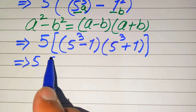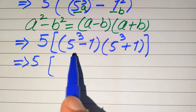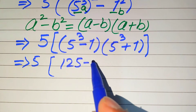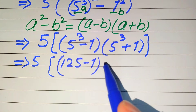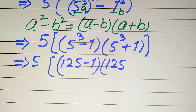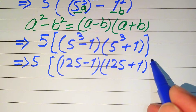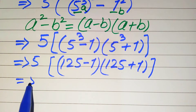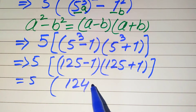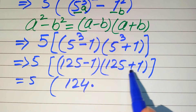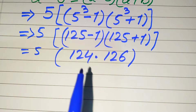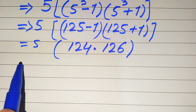Since the calculator is not allowed, we show all working. We know that 5 cubed equals 125, so 5 cubed minus 1 becomes 125 minus 1, which equals 124, and 5 cubed plus 1 becomes 125 plus 1, which equals 126. So we now have 5 times 124 times 126.